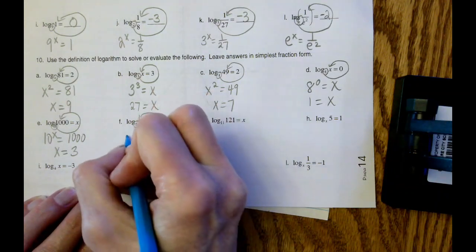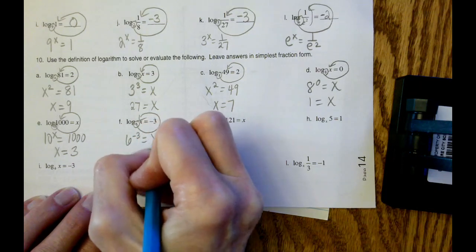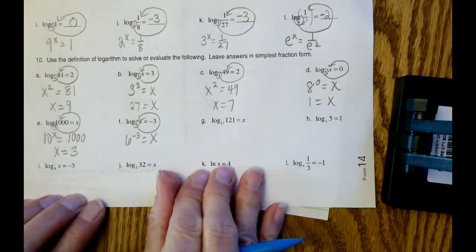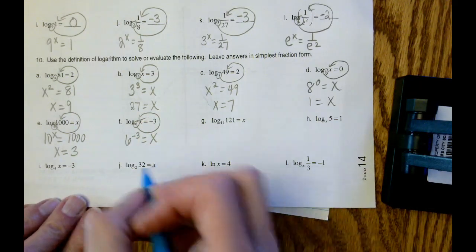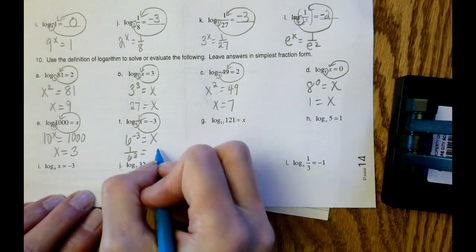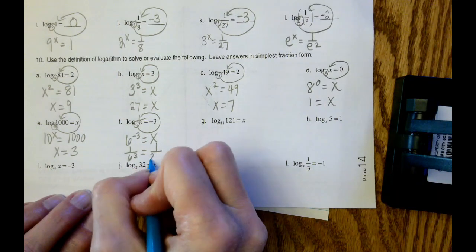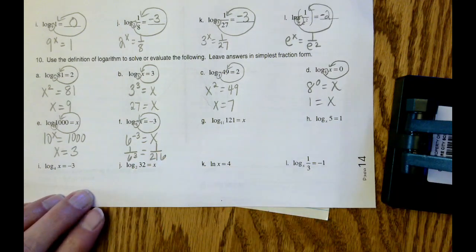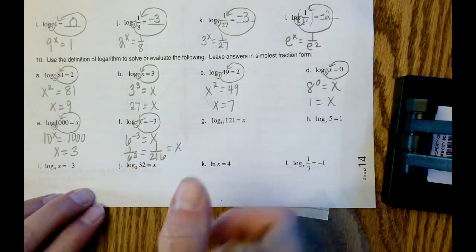6 to the negative 3 equals x. Remember negative exponents mean to flip and change the sign in the exponents. So this is 1 over 6 cubed. And 1 over 6 cubed is 216. 1 over 216 equals x.